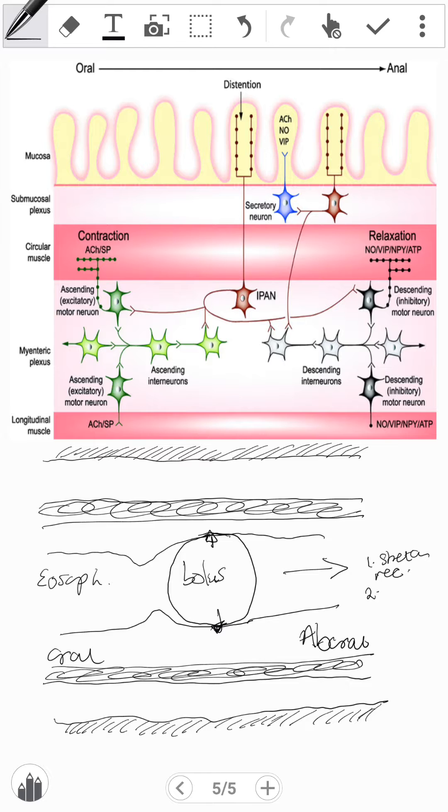So these stretch receptors will send an impulse. These are the afferents. They'll send an impulse to the myenteric plexus.